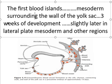So the sequence of events is: first they will appear in the mesoderm surrounding the yolk sac, then second they will appear in the lateral plate mesoderm, and then in all other regions where vessels have to be developed. So first, blood islands appear at the age of three weeks of development in the mesoderm surrounding the wall of the yolk sac.